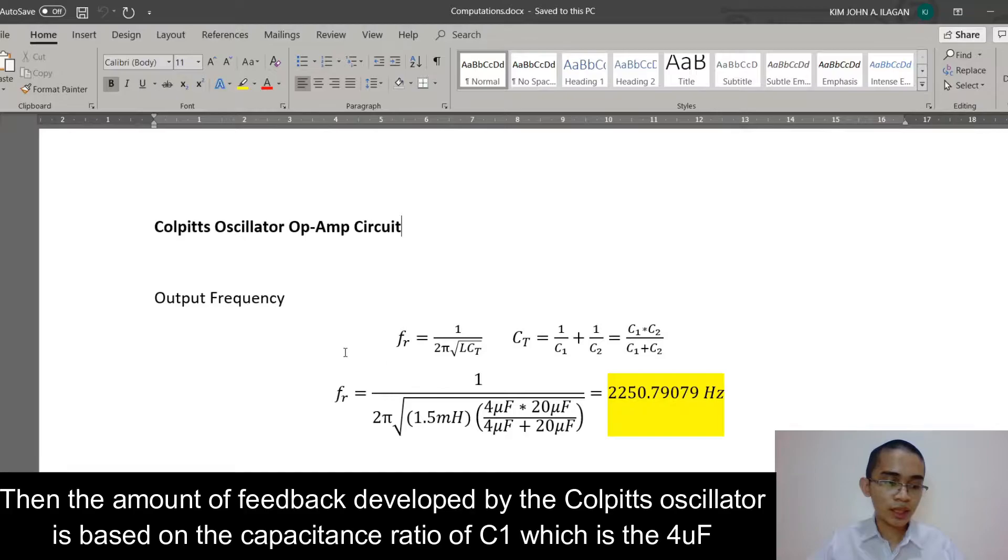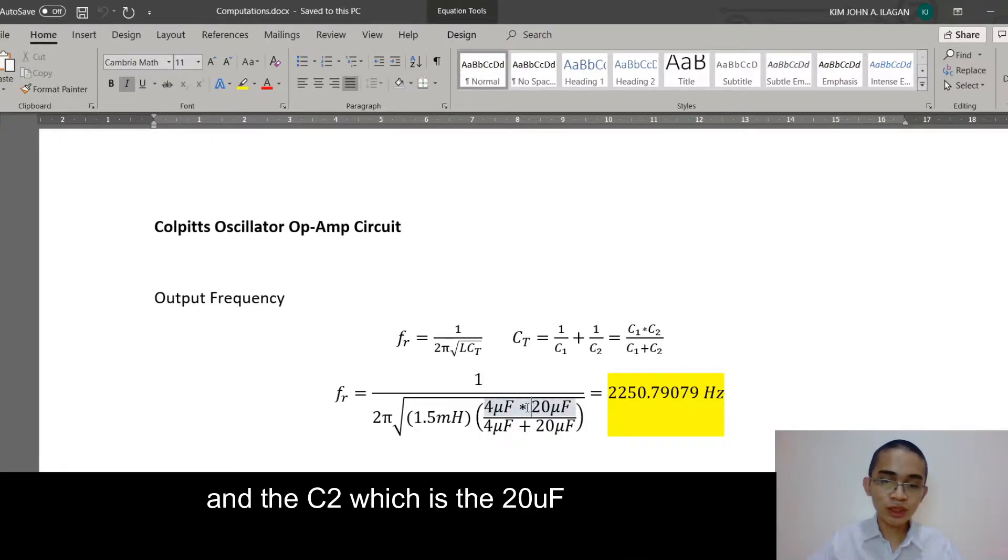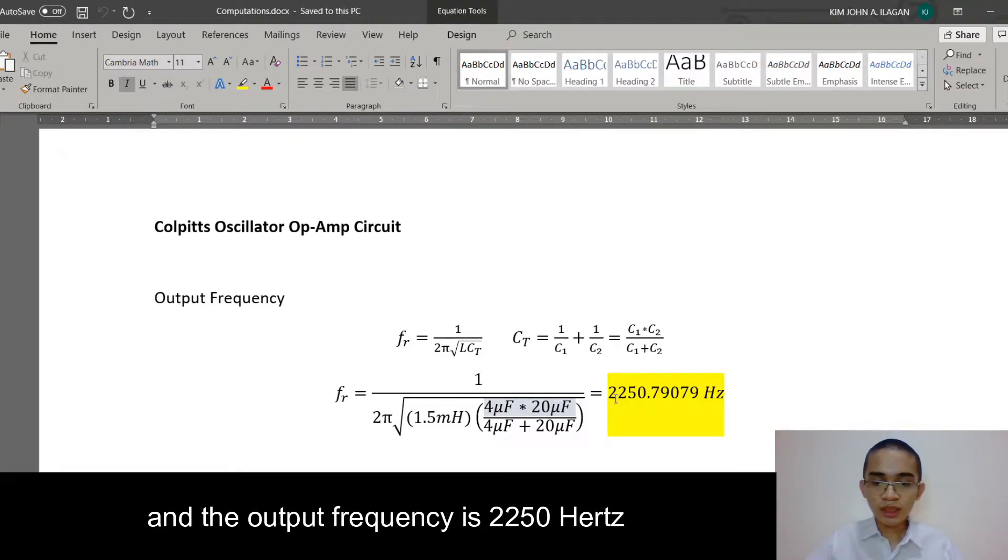The amount of feedback developed by the Colpitts oscillator is based on the capacitance ratio of the C1 which is 4 microfarad, and the C2 which is the 20 microfarad. And the output frequency is 2250 hertz.